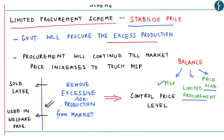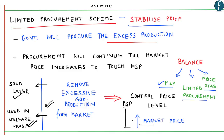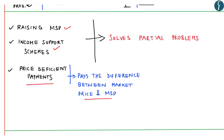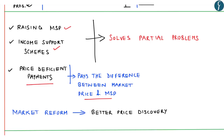The cereals collected under this limited procurement scheme can be sold later by the government or used in welfare programs. However, the author suggests that the limited procurement scheme will not work if MSP is fixed at a level to which the market price will never rise. So there needs to be a balance between market price and minimum support price. The author suggests that raising MSP, income support schemes and price-deficient payments — the difference between market price and MSP — solves only the partial problem with respect to agrarian distress. A sustainable solution is market reform to enable better prices.